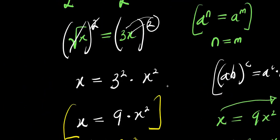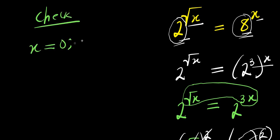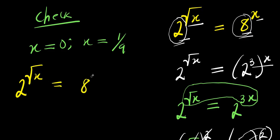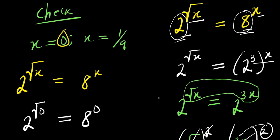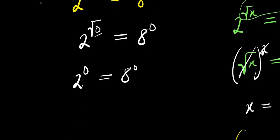Now the next thing we are going to do is check by inserting the two values for x. For x equals 0: we have 2 to the power of square root of 0 equals 8 to the power of 0. Square root of 0 is 0, so 2 to the power of 0 equals 8 to the power of 0. Any number raised to the power of 0 is 1, so both sides equal 1. Left-hand side equals right-hand side.